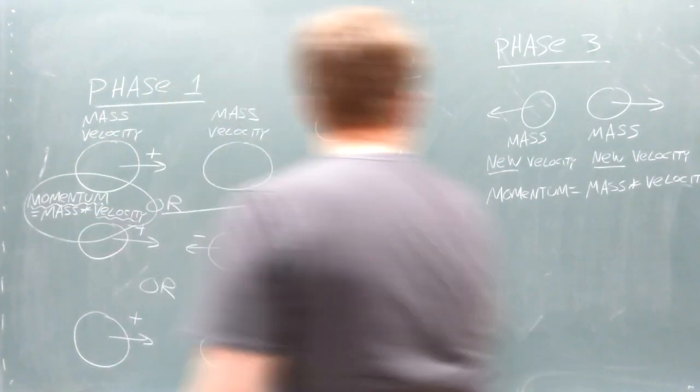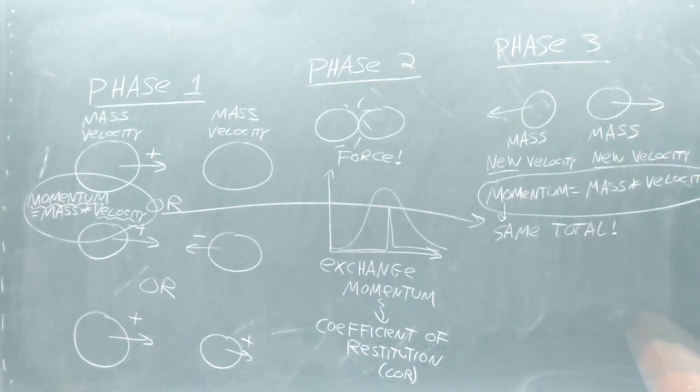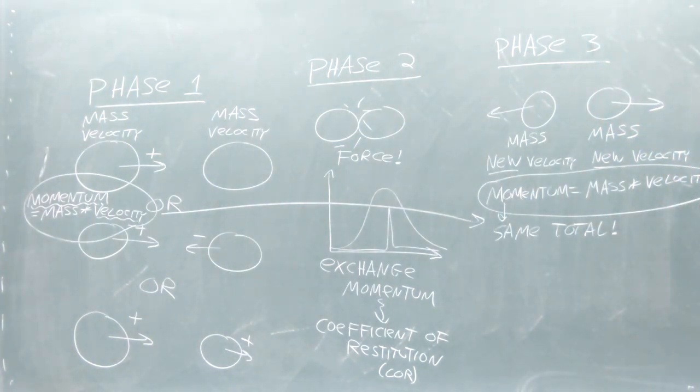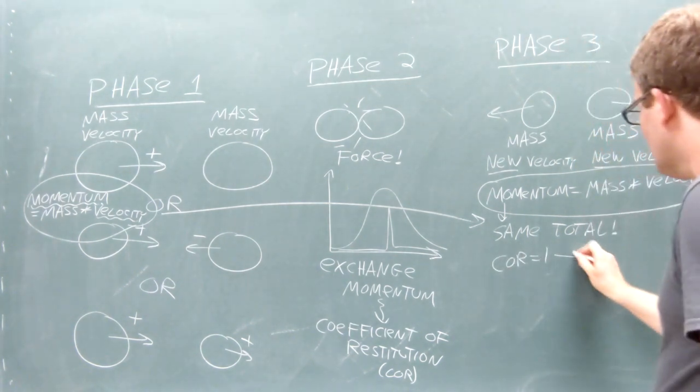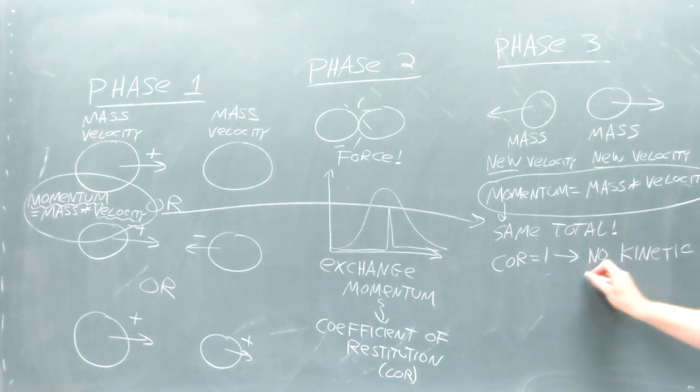But the momentum exchange during phase two will always guarantee that the total momentum of the two colliders is the same during phase three as it was during phase one. You can think of the coefficient of restitution as a measure of how much kinetic energy was lost during the interaction.